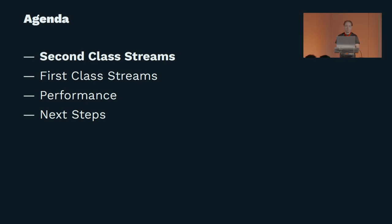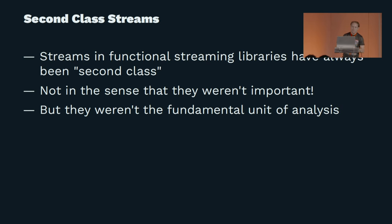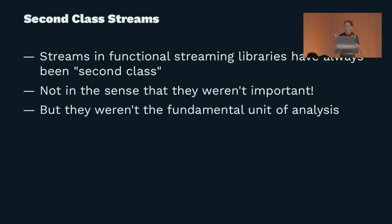What do I mean when I say streams have been second class? If you look at any of the functional programming libraries for streams — ZEO streams completely among them — streams were an important concept, but in each of those libraries streams were second class in the sense that they weren't the fundamental thing. The atom that everything was built on was not a stream; it was a ZEO, or an F, or a Cats IO. And there are some trade-offs that go along with that.